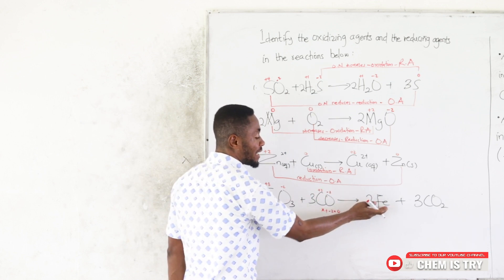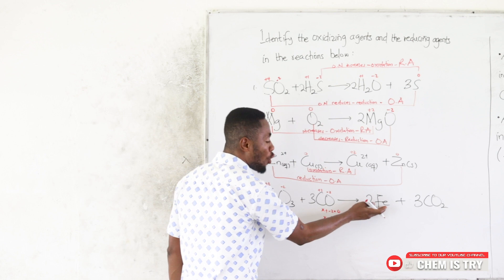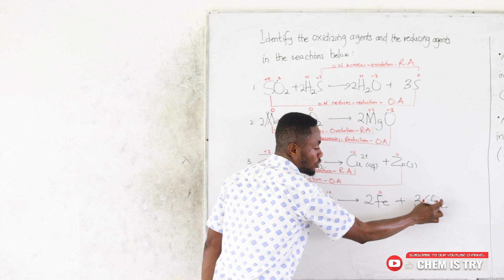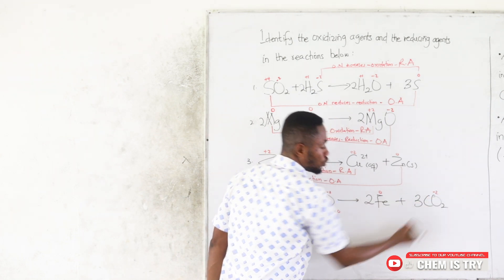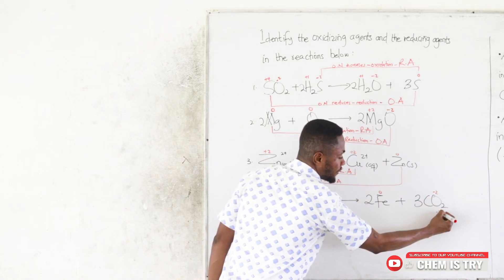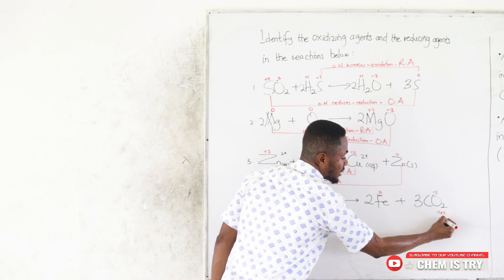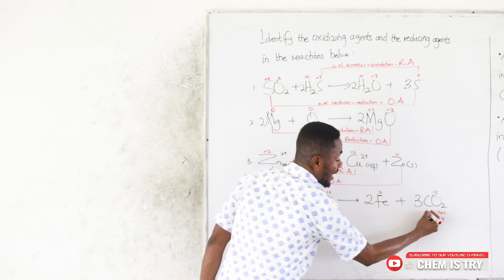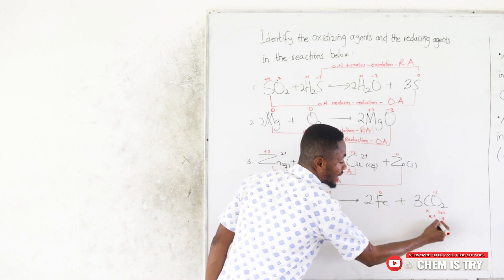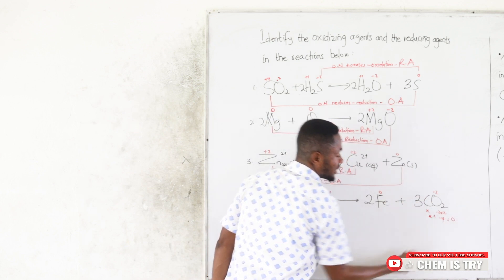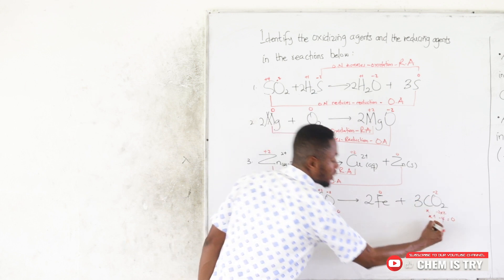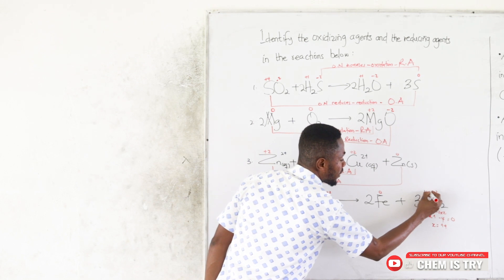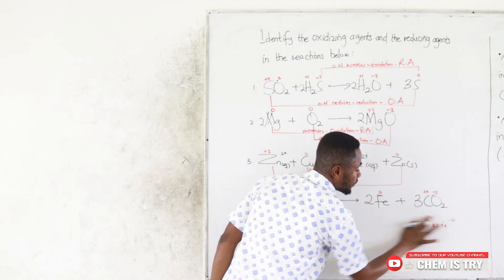On the product side, iron (Fe) is standing alone so its oxidation number is 0. In CO₂, oxygen is −2 and there are two atoms giving −4; letting carbon be x: x + (−4) = 0, so carbon in CO₂ has oxidation number +4.